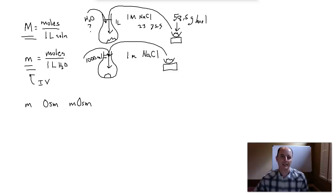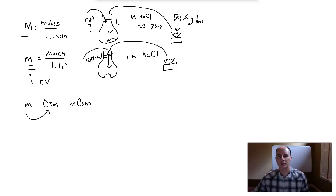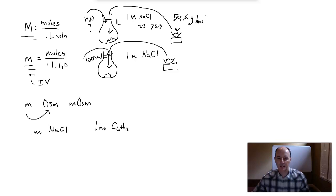Now, just knowing molality is misleading when you're looking at osmosis. So we want to take this a step further and go from molality to osmolality. You could do the same thing with molarity to osmolarity, but I'm going to stick with molality. So if we have, for example, one molality sodium chloride and one molality glucose, you might be thinking that these are actually the same concentrations. But in reality, they aren't.